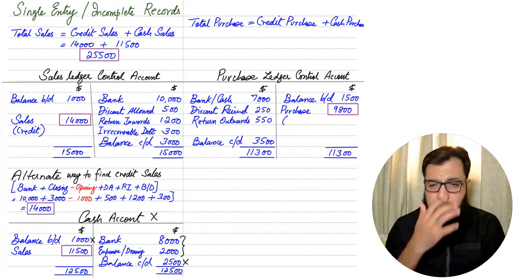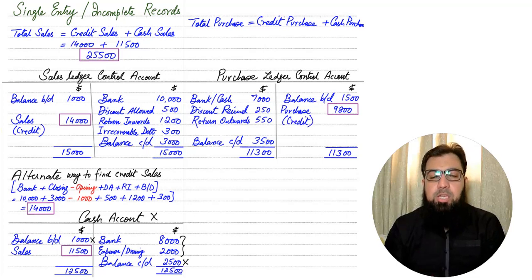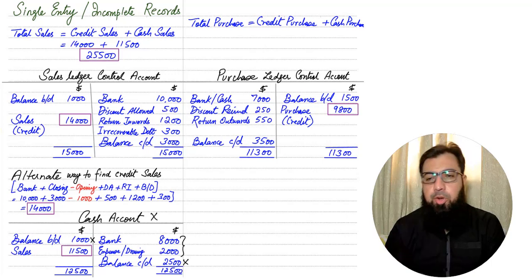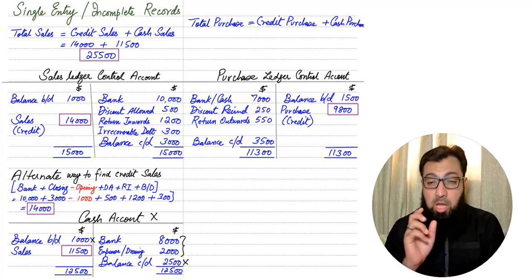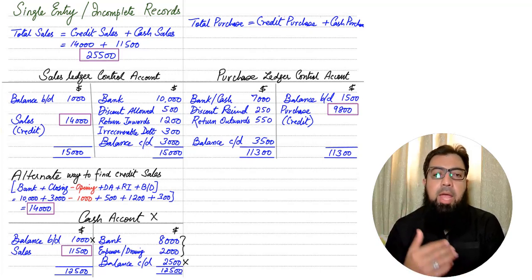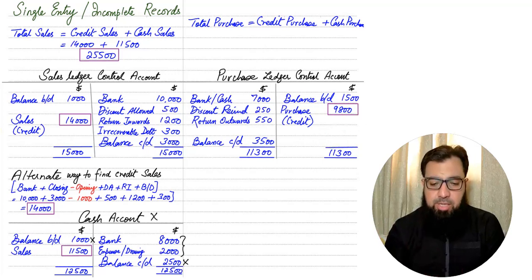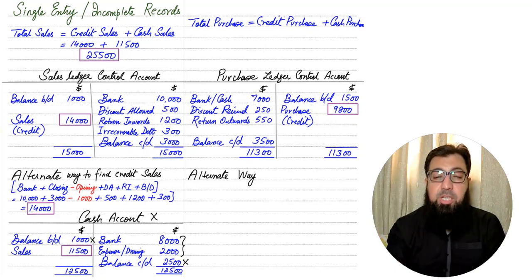The question arises: is this purchase figure total purchase or credit purchase only? The answer is it is credit purchase only. Whenever we make a liability account, liability only arises when we buy goods on credit. Whenever we buy goods for cash or by cheque, the liability never goes up.